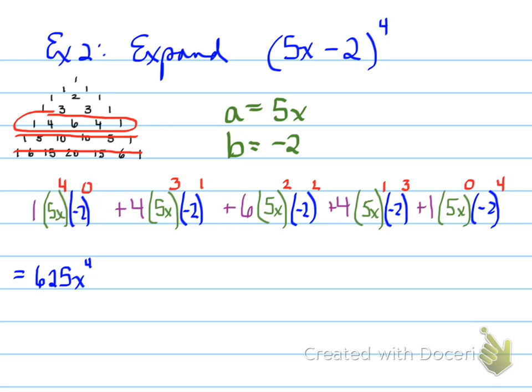Next, we have the next number is going to be minus 1,000x cubed. The next number, why is it negative 1,000 you may ask? Well, let's look at the numbers.